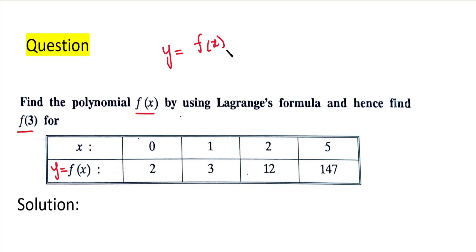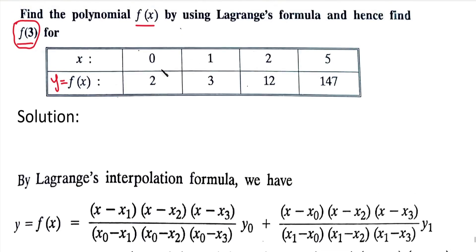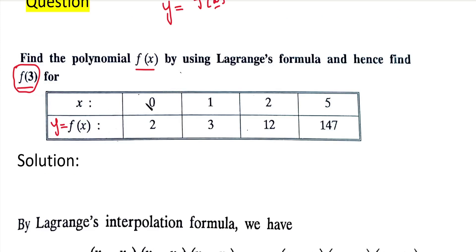We use Lagrange's formula to find the polynomial y equal to f(x). The x values are 0, 1, 2, 5 and the y values are 2, 3, 12, 147. First we find the polynomial, and then we find f(3) by substituting x equal to 3.